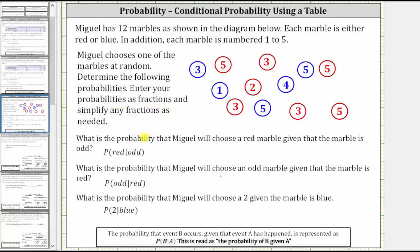First we're asked: what is the probability that Miguel will choose a red marble given that the marble is odd? Because we are given the marble as odd, this is called conditional probability. We can denote this probability using the notation shown here — the probability a marble is red given the marble is odd.